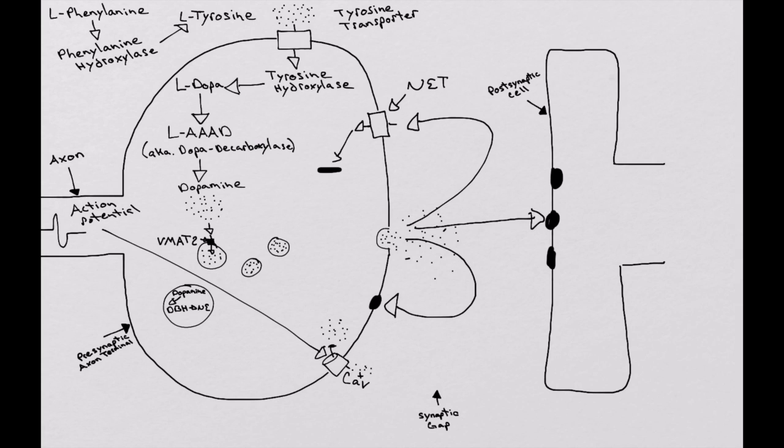So those are pretty versatile transporters. Once inside the cell, a couple things can happen. One of the things that can happen is the norepinephrine can be metabolized. And so norepinephrine is metabolized primarily by monoamine oxidase type A, type A only within the presynaptic axon terminal.